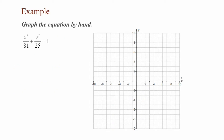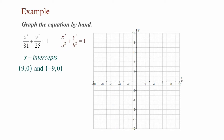In this example, graph the equation by hand: x² / 81 + y² / 25 = 1. I know this is an ellipse because of the plus sign, and it matches x² / a² + y² / b² = 1. Finding the x-intercepts: a² = 81, the square root of 81 is 9, so a = 9 and my x-intercepts are (9, 0) and (−9, 0). For y-intercepts: b² = 25, so b = 5, giving y-intercepts of (0, 5) and (0, −5).